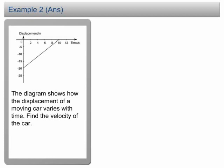As we learned before, in a displacement time graph, the velocity is equal to the gradient of the graph. To find the gradient of the graph, we need to draw a triangle from the straight line.